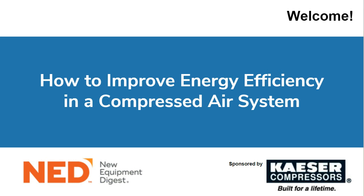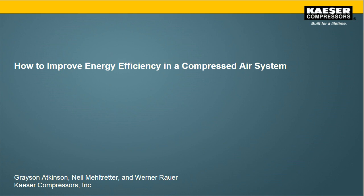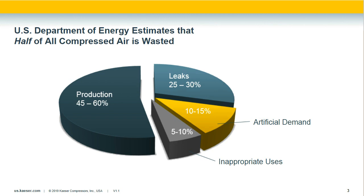Welcome, Neil — we're going to start with you. The floor is yours. Thank you, John, and thanks to everyone joining us for today's webinar, 'How to Improve Energy Efficiency in a Compressed Air System.' The U.S. Department of Energy estimates that half of all compressed air is wasted. Imagine if 50% of your product was scrapped — that would be a huge loss. With your compressed air system, this could be happening continuously and you just don't know it.